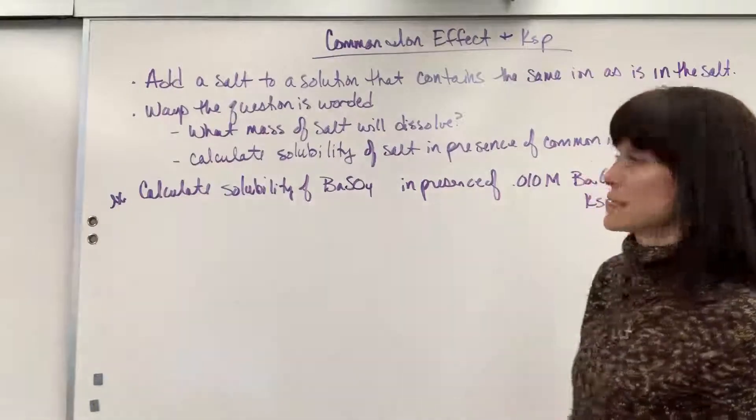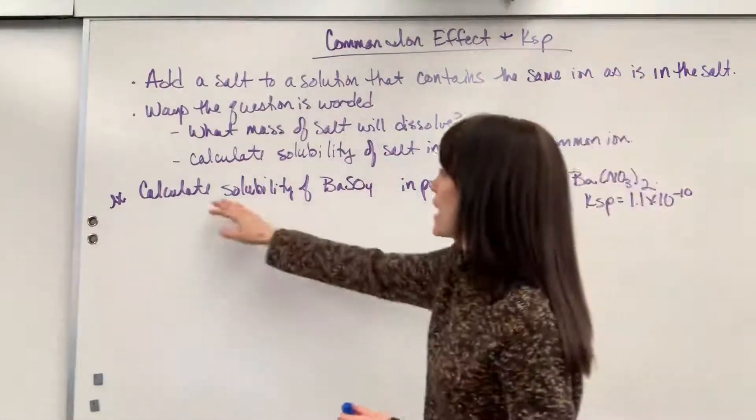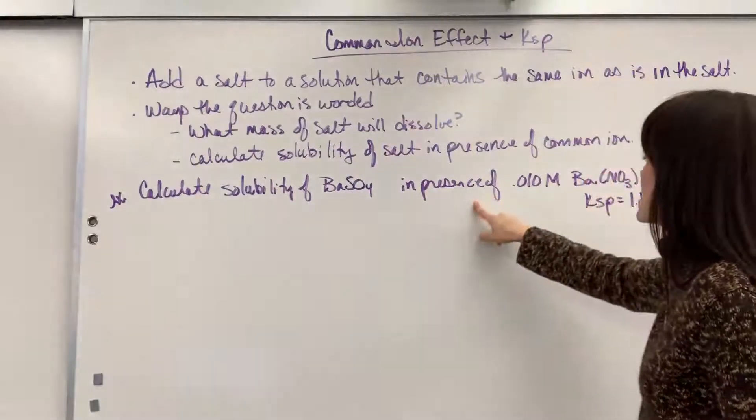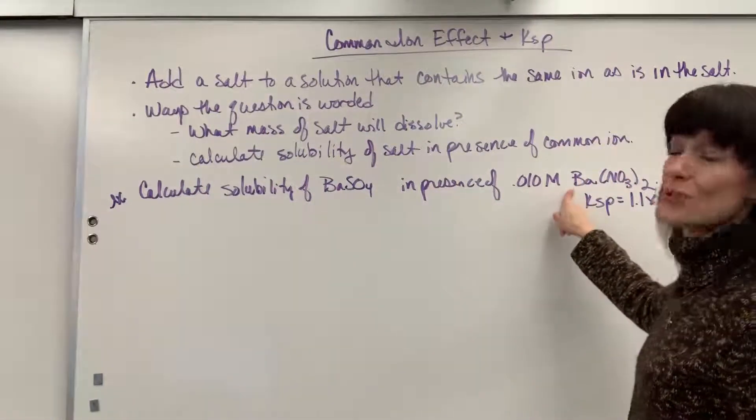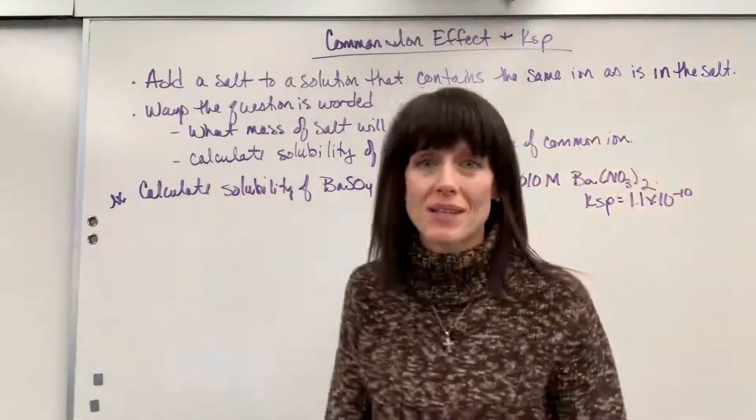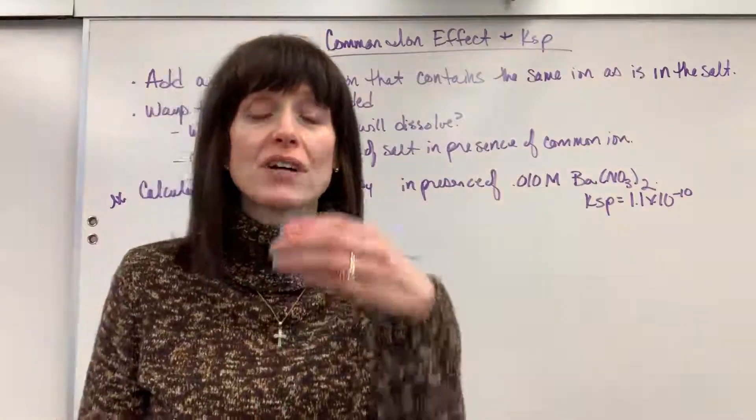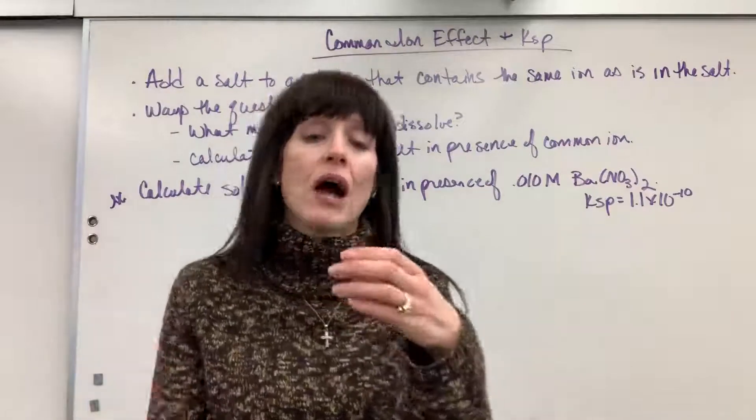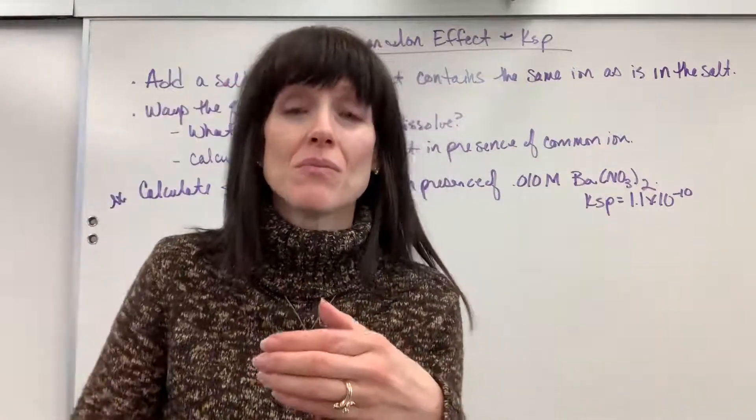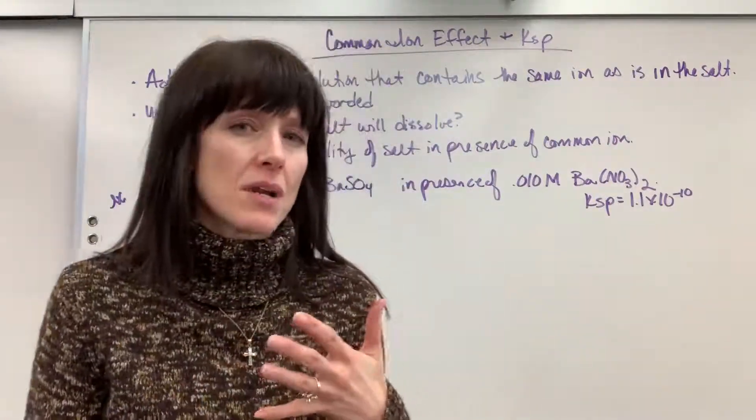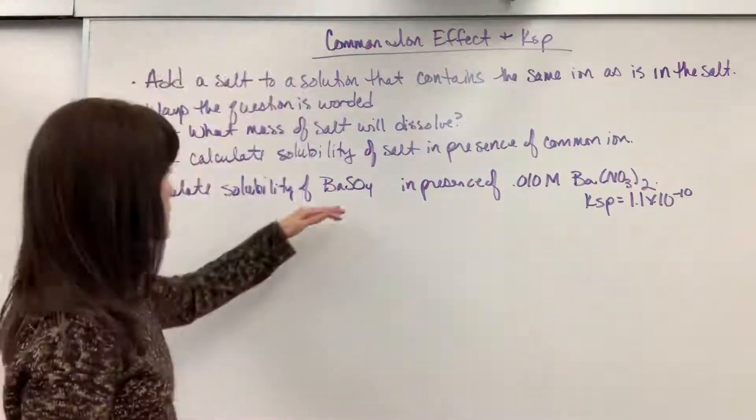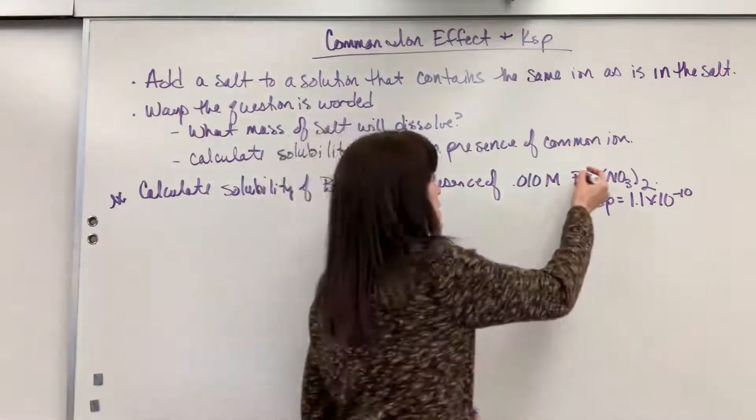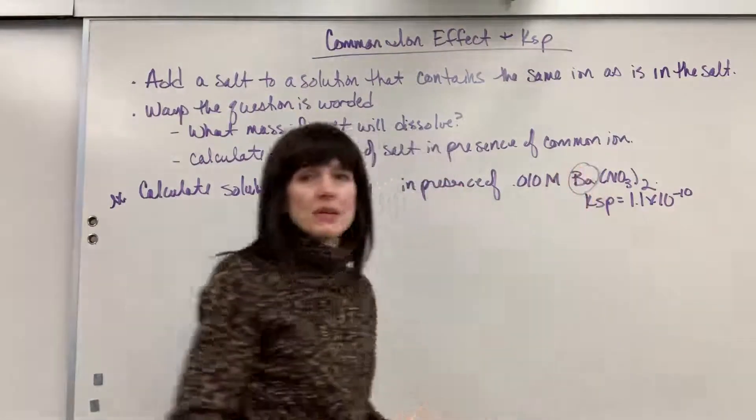So here is an example problem. It says calculate the solubility of barium sulfate in the presence of 0.01 molar sodium nitrate. So how do you interpret this? They actually have a solution of barium nitrate, 0.01 molar, and we're going to put into it barium sulfate. So what's the common ion? What's the same from barium sulfate to barium nitrate? It's the barium. It's this barium right here that is going to be the common ion.